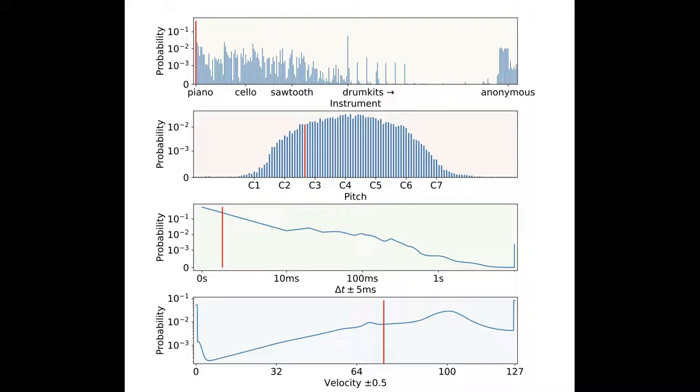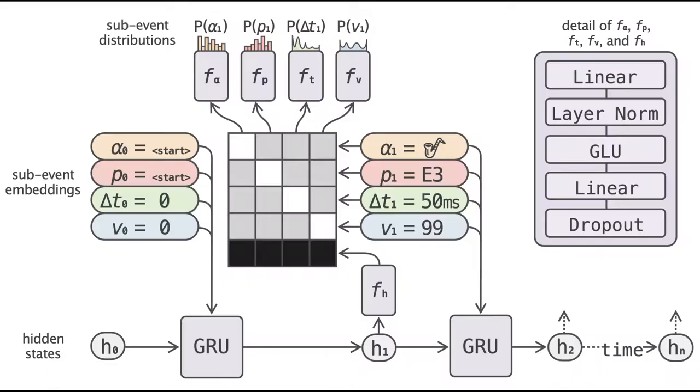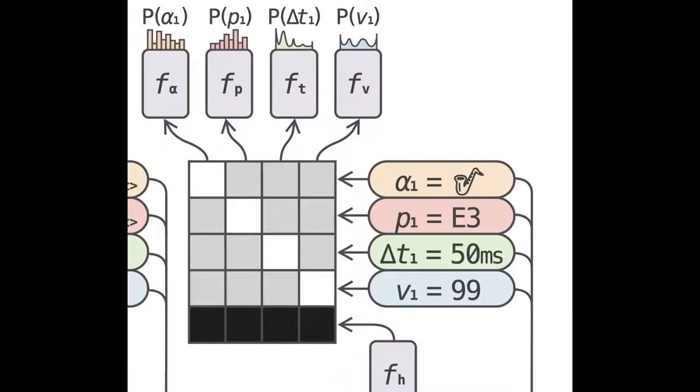For example, what is the pitch of the next event if it must be a note off? What is the instrument of the next event if it occurs in exactly 300 milliseconds? Our solution is to randomize the dependencies between sub-events at training time, fitting all possible orderings at once. This is depicted by the mixing matrix at the center of the system diagram.